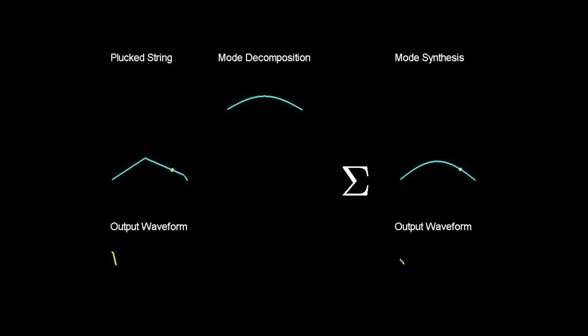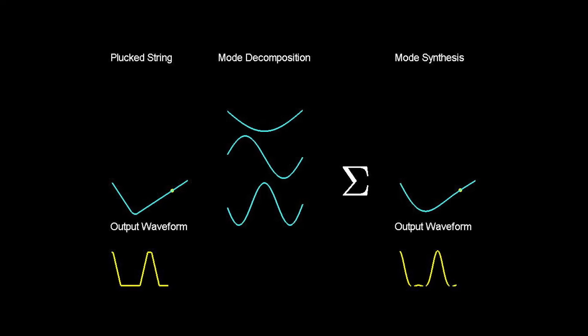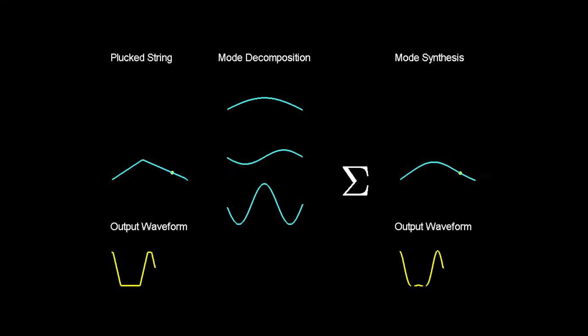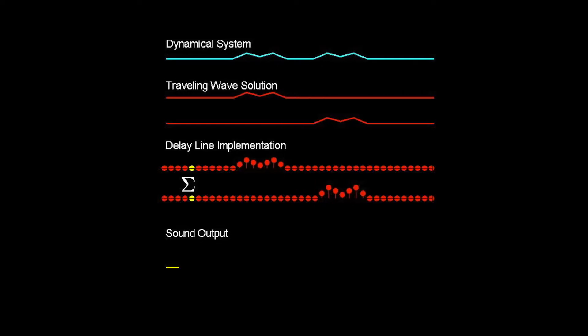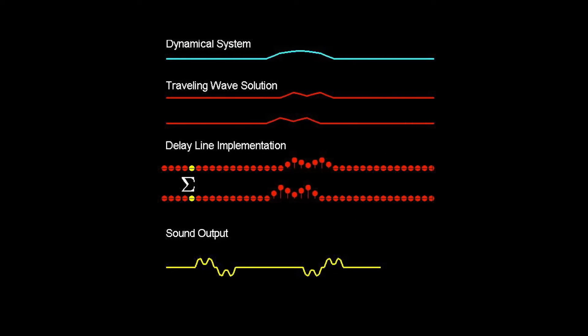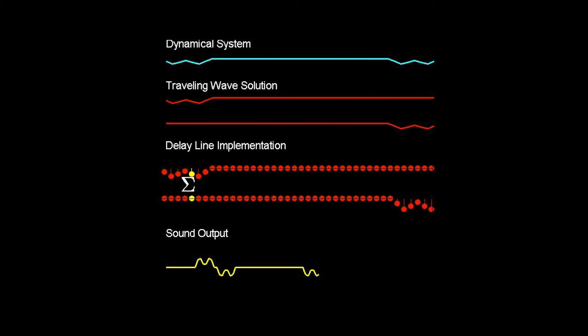Physical modeling synthesis has been around for a while. One of the better known methods is sometimes referred to as modal synthesis, where the complex dynamic behavior of a vibrating object, such as a musical instrument, is broken down into contributions from various modes, each of which oscillates at its own natural frequency. Another method, digital waveguide synthesis, is well suited to instruments whose components can be modeled in 1D, such as strings or acoustic tubes, breaking vibration down into traveling waves implemented via digital delay lines.